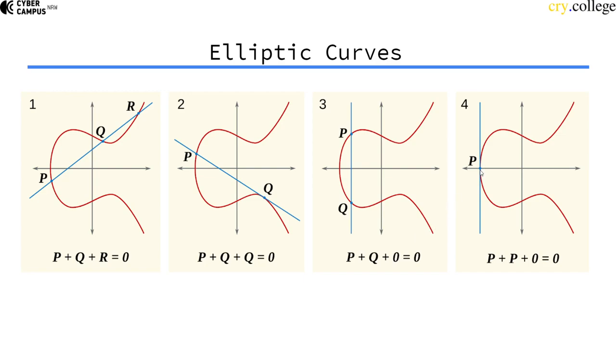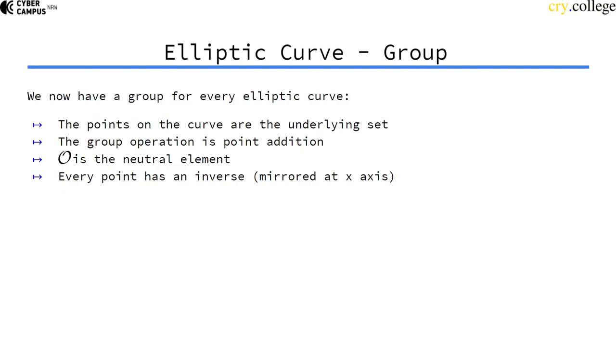And the fourth case where the point is actually sitting on the x-axis. So if we flip the y-coordinate, we end up on the same point. So this point is inverse to itself, and the third point is also the point at infinity. For now, intuitively, you can imagine the point of infinity be somewhere all the way up on the y-axis. But we'll see what this point at infinity is a bit later.